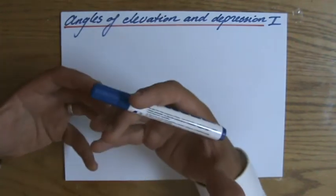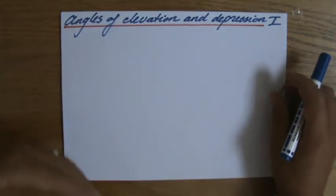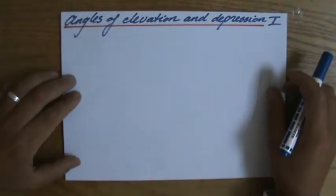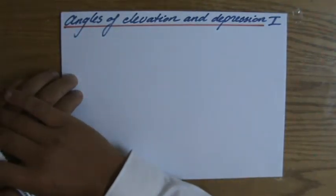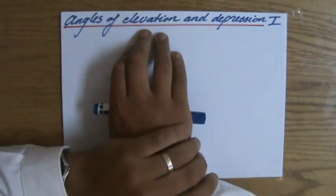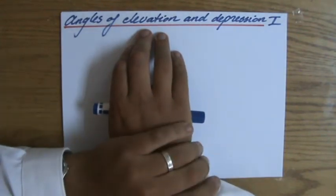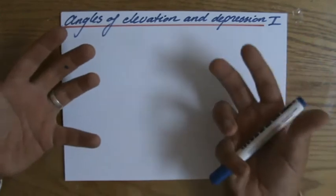Angles of elevation and depression relate to trigonometry, so usually it involves some sine, cosine, or tangent. But what are angles of elevation and depression? Let's look at the word elevation. Perhaps you discover the word elevator in it, and indeed elevation has something to do with going up.